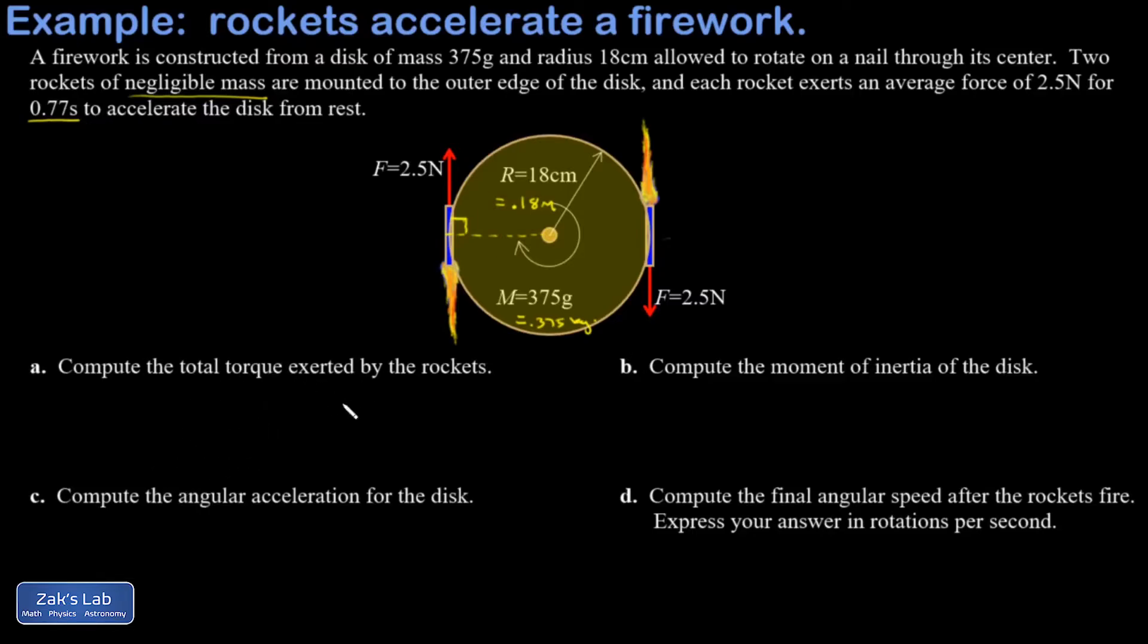I want the total torque exerted by the rockets in part A, and there's two of them doing exactly the same thing. Each one of them exerts the torque given by the perpendicular component of force times the size of the lever arm, which is just the radius of the disc. So I end up with 2.5 newtons multiplying 0.18 meters for the length of the lever arm.